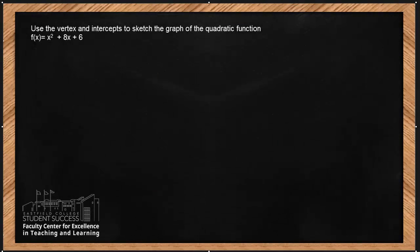Hello everybody, we're in math 1314. This problem deals with quadratic functions. In particular, we're going to be looking for how to find the vertex and intercepts in order to sketch the graph of the quadratic function. Let's read the problem. Use the vertex and intercepts to sketch the graph of the quadratic function. The quadratic function is f of x equals x squared plus 8x plus 6.